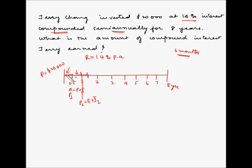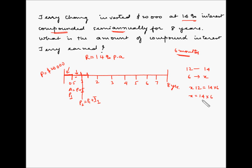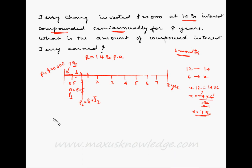We've been given 14% per annum, but our compounding period is 6 months. Since the rate of interest is proportional to time: for 12 months the rate is 14%, so for 6 months we cross-multiply: x = 14 × 6 ÷ 12 = 7%. So the rate of interest per compounding period is 7%.